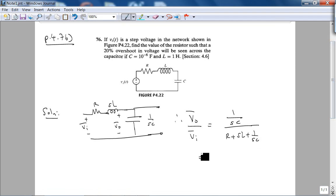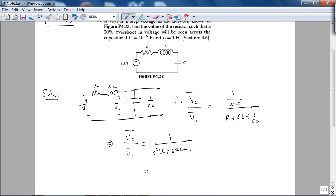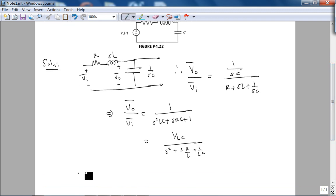So if you multiply, and let's try to put this in standard second order form, this is V0 over VIN equals 1 over S squared LC plus SRC plus 1. This equals 1 over LC divided by S squared plus S times R over L plus 1 over LC, and this is in standard second order form. Therefore, our omega N is 1 over square root of LC, natural frequency, and 2 zeta omega N is R over L.